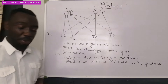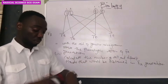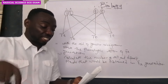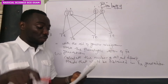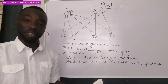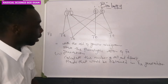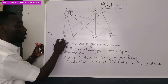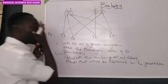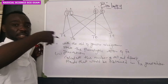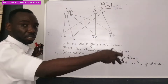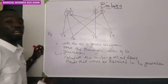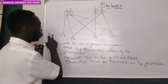Remember the question: the F1 were selfed and 160 F2 plants were obtained. Since we have crossed this, we've gotten a heterozygous gene here — they are all the same. When they now cross themselves, that is what they mean by self-crossed or selfed. Now let us bring out these two and cross them to get our F2 generation.